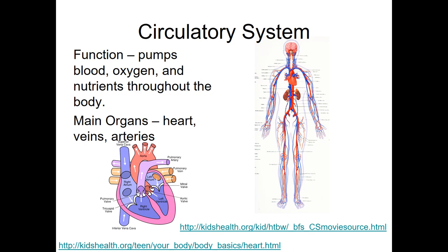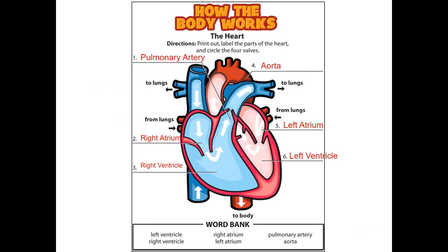The circulatory system is like a highway system where many things get transported. Your heart powers the blood pumping through your veins and arteries. Blood is basically all red, but in diagrams we color it blue and red to show what is oxygenated — carrying oxygen — and what is deoxygenated. Your blood transports oxygen from your lungs to all parts of your body, then brings back carbon dioxide to your lungs to get rid of it. Other things transported include nutrients and hormones from the endocrine system.